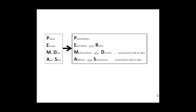The P in 'please' will help us remember parentheses come first. The E in 'excuse' will help us remember exponents next — this also includes roots. 'My dear' will help us remember multiplication and division, working from left to right. 'Aunt Sally' will help us remember addition and subtraction, also working from left to right.